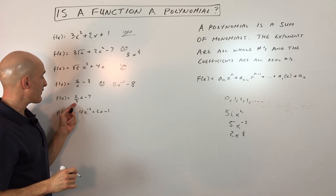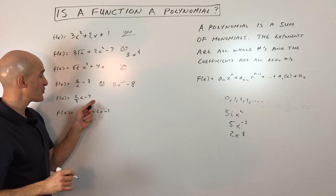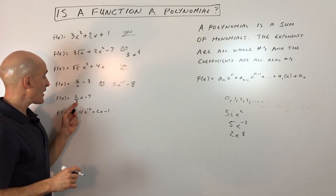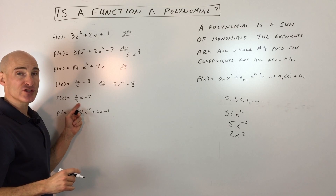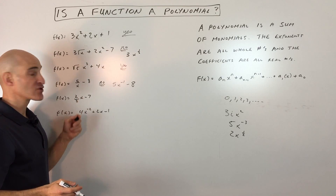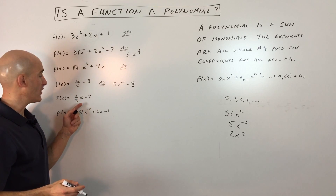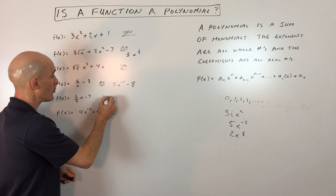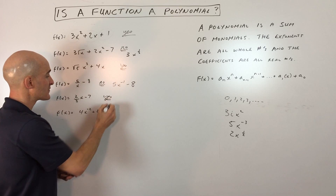This one: f(x) = (2/3)x - 7. You've got a fractional coefficient — that's okay. You just don't want a fractional exponent. So this one is a polynomial.